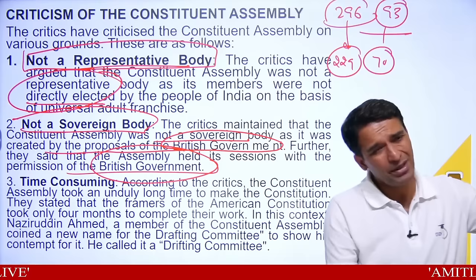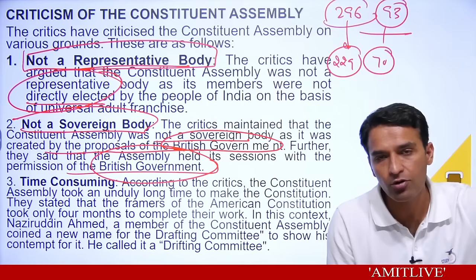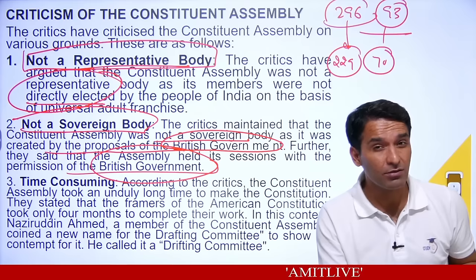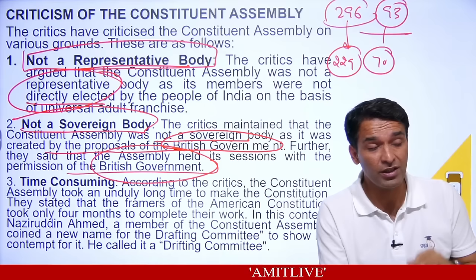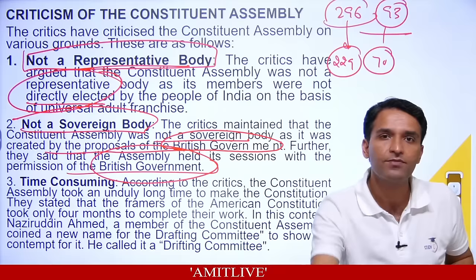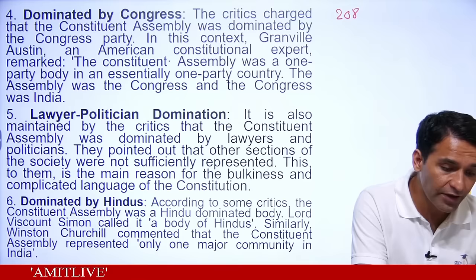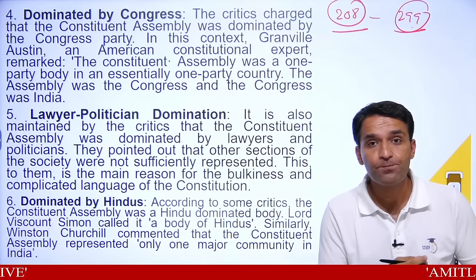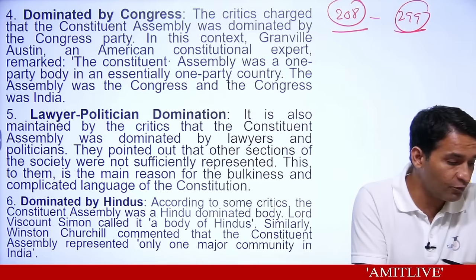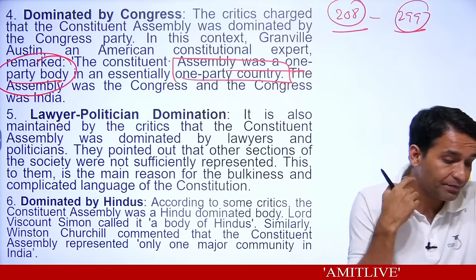This is the argument of critics: it began with a British idea. Also, it was time-consuming — the US Constitution, which inspired many constitutions worldwide, took only four months to make, while we took three years. Furthermore, it was dominated by Congress — 208 out of 299 members. Critics said it was one party body in an essentially one party country, dominated by lawyer politicians, and other sections of society were not sufficiently represented.